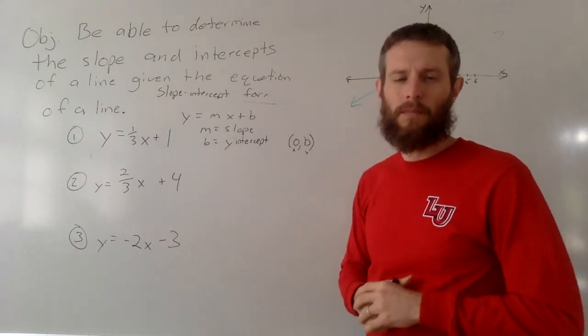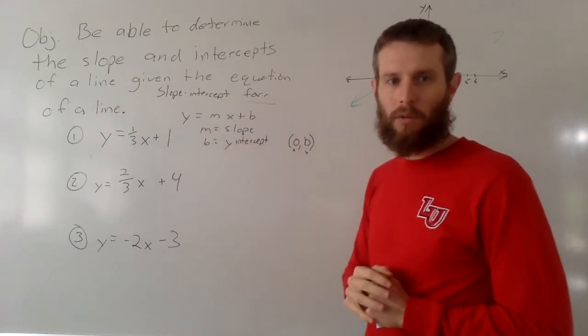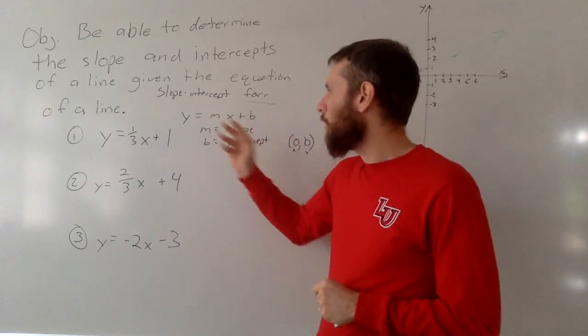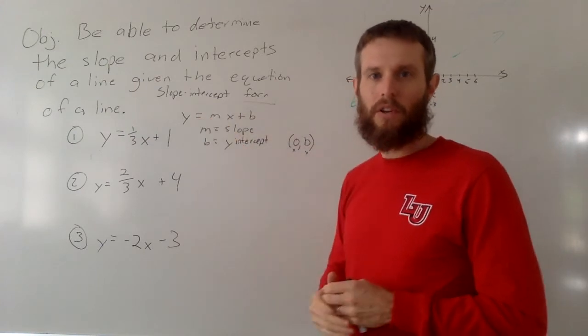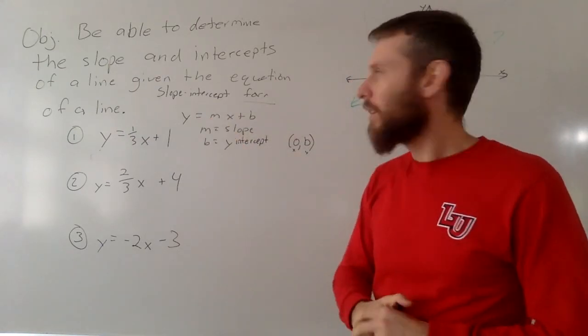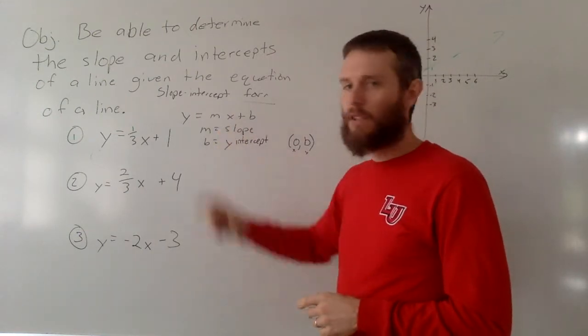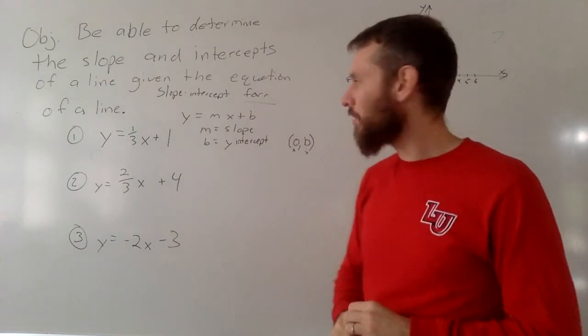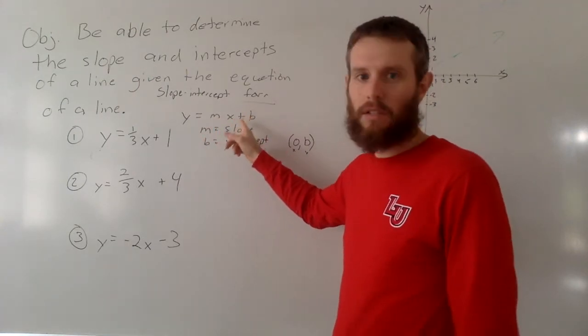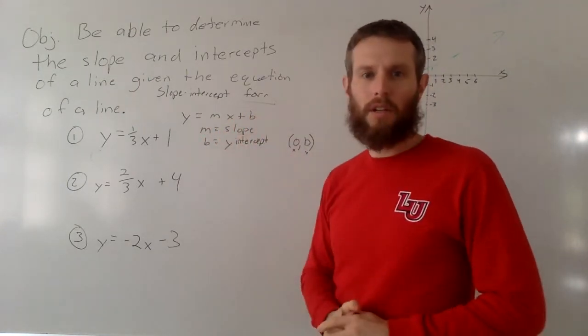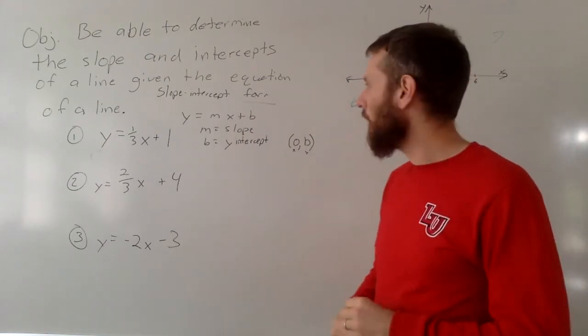And the slope-intercept form is basically, you have y by itself on one side, the variable y, and equals, and then it's going to be something x, the coefficient for x could be a fraction or another number. So the coefficient for the x, and that tells you your slope, and then plus, or we know that minus, plus a negative number would look like a minus, and then another could possibly be another fraction, or could be a constant.